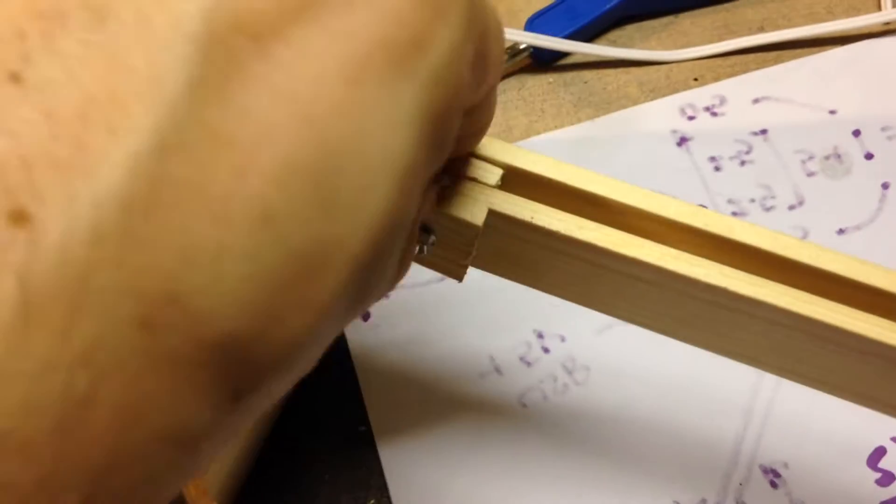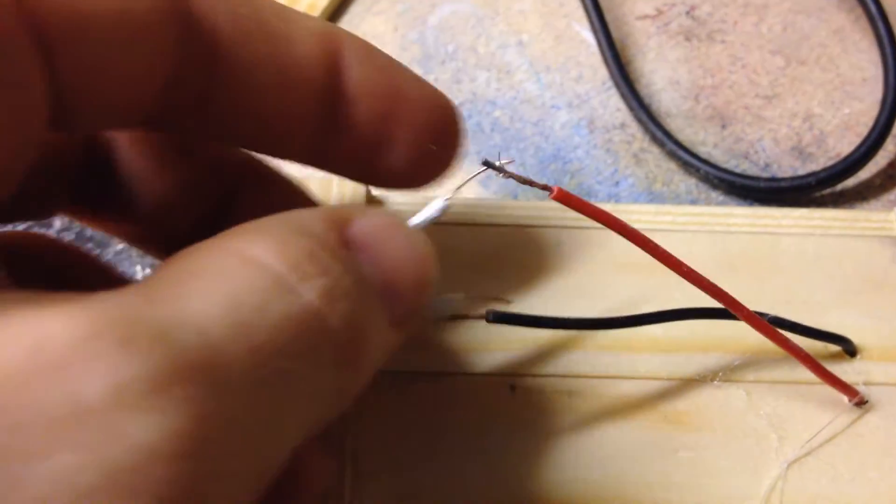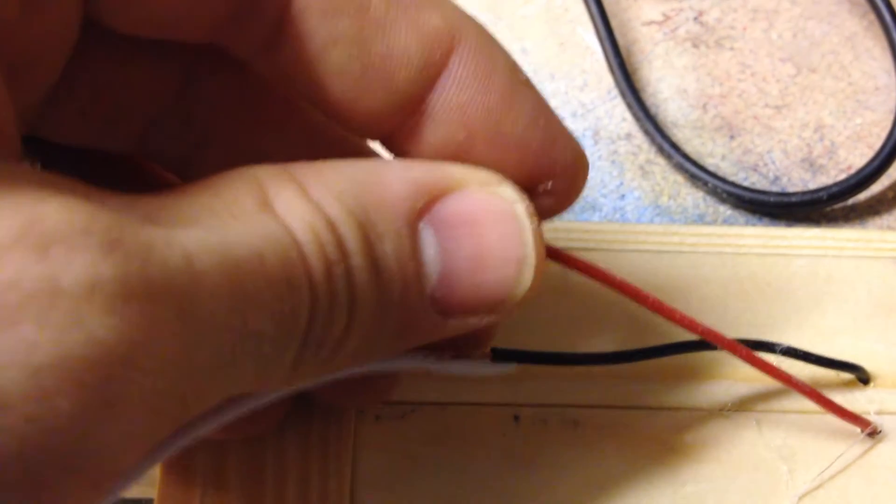Drill a hole just behind where that support is and thread your bell wire all the way up the arms and over towards where the LED head is. Apologies for the camera here, I had to do this by hand.